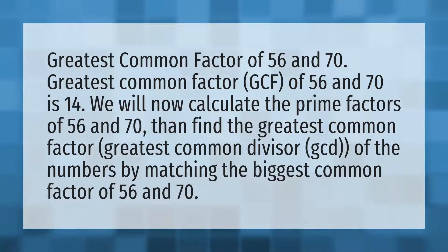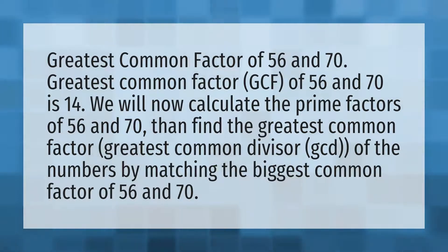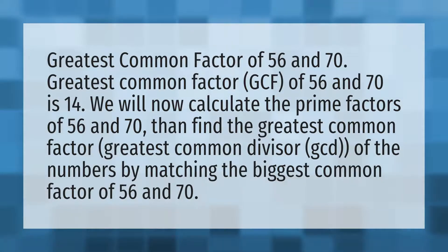Greatest common factor of 56 and 70. The greatest common factor, GCF, of 56 and 70 is 14. We will now calculate the prime factors of 56 and 70, then find the greatest common factor, greatest common divisor, GCD, of the numbers by matching the biggest common factor of 56 and 70.